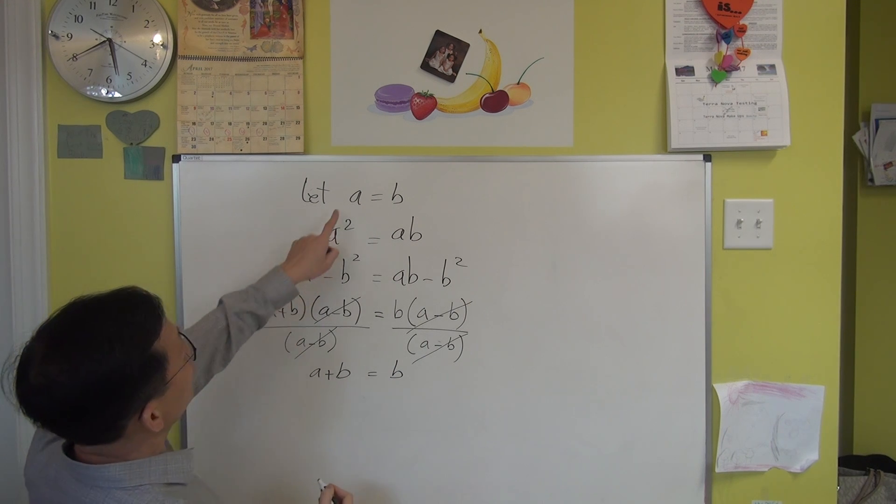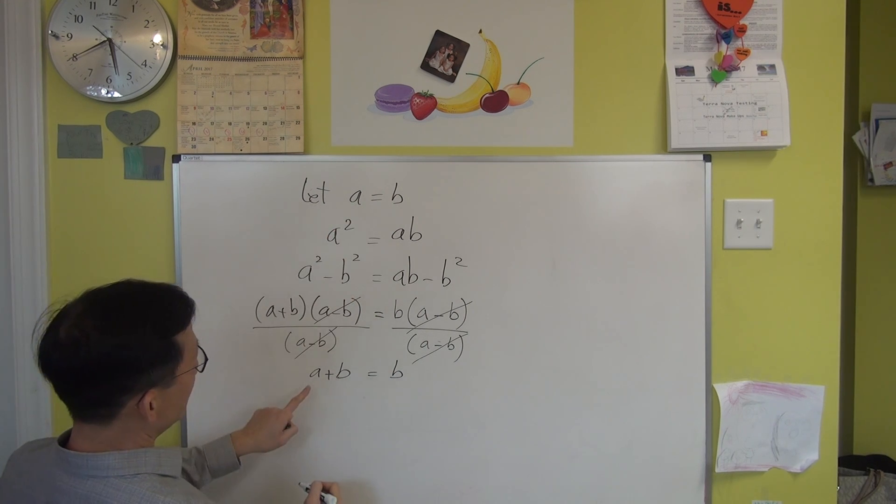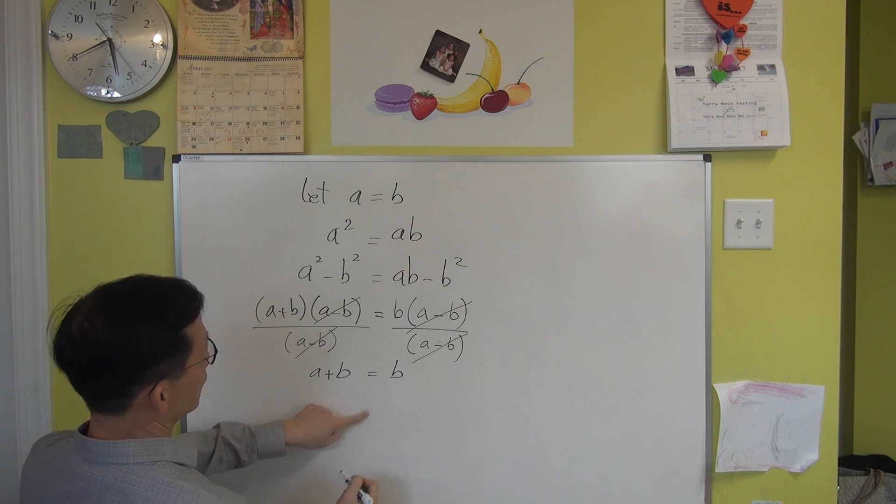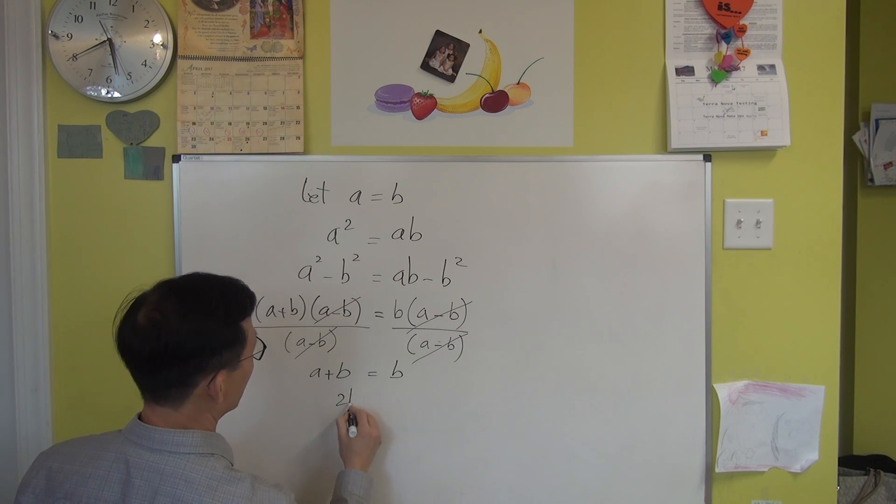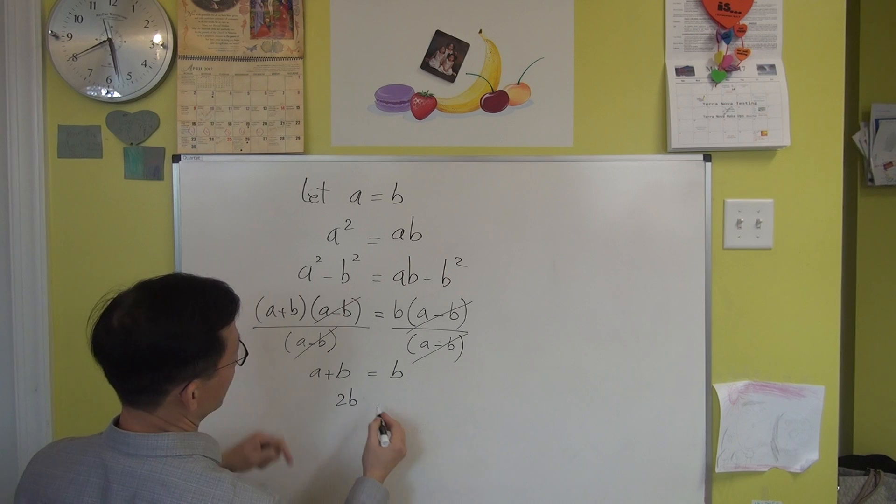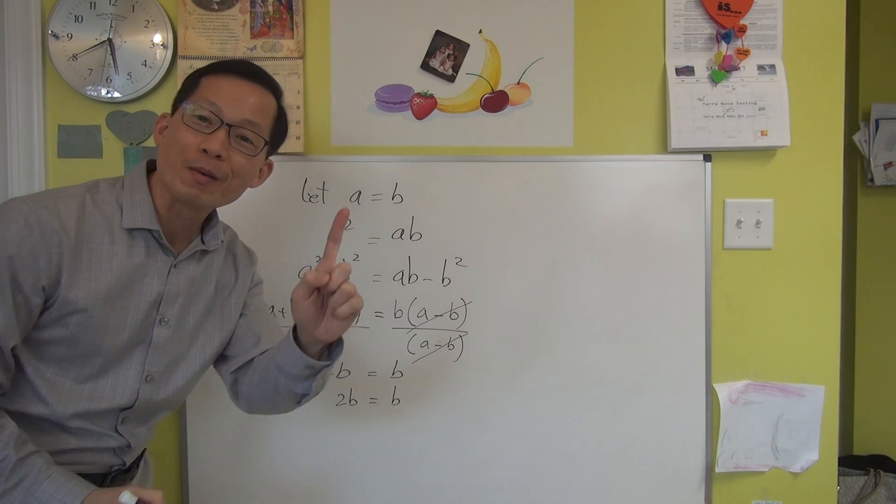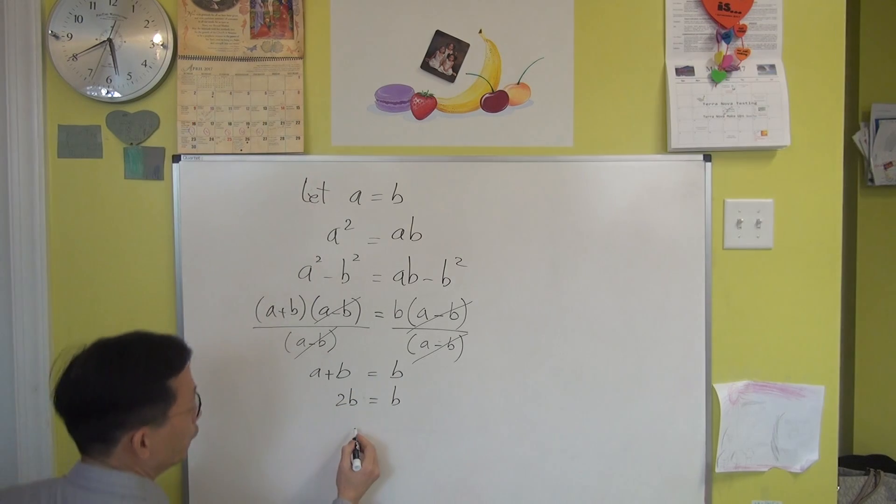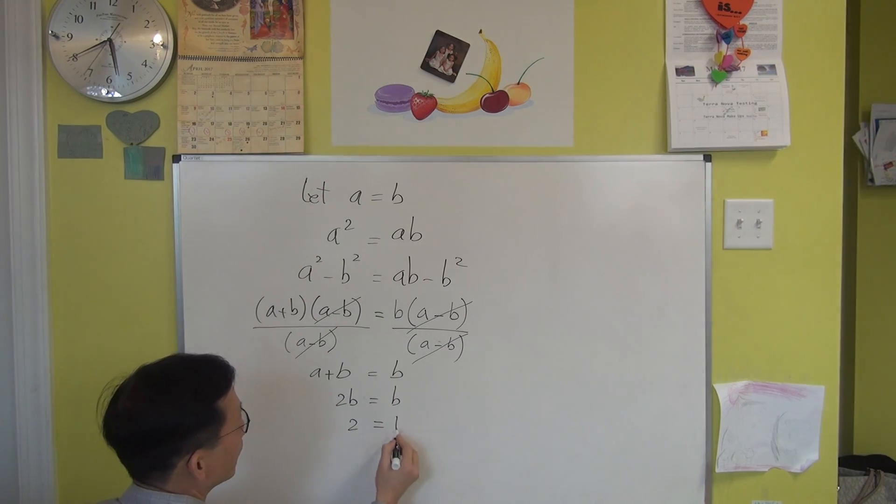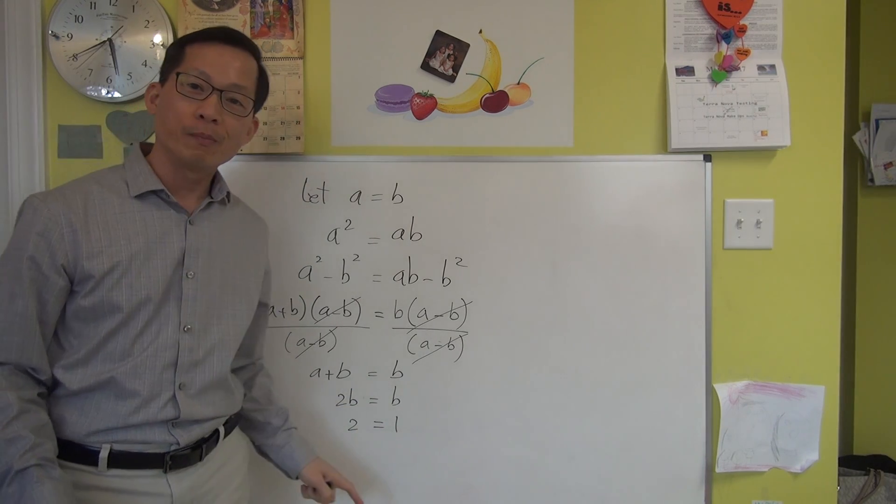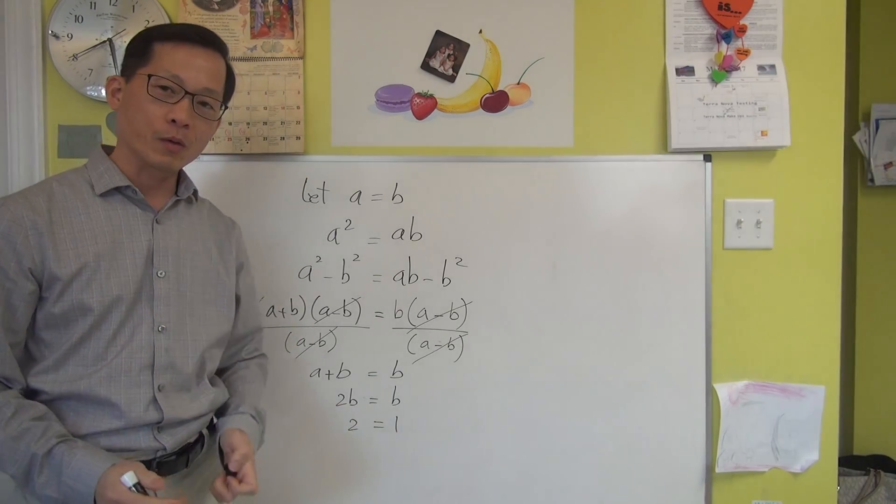And you know that A equal to B. So this is the same as 2B, right? A and B is the same. Equal to 1B. Or 2 boxes equal to 1 box. Or 2 equal to 1. Voila! So 2 is actually equal to 1.